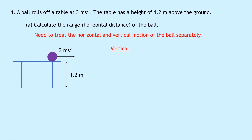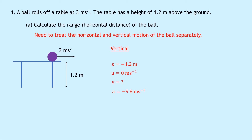For the vertical motion we can use SUVAT. Writing down SUVAT: the displacement s is minus 1.2 meters — negative because we're defining upwards as positive and downwards as negative, and the ball travels down. The initial velocity u is 0 meters per second, which is always the case for these projectiles because the ball hasn't started moving vertically yet. We don't know the final velocity v, and the acceleration a is minus 9.8 meters per second squared. The time t is what we're trying to find.